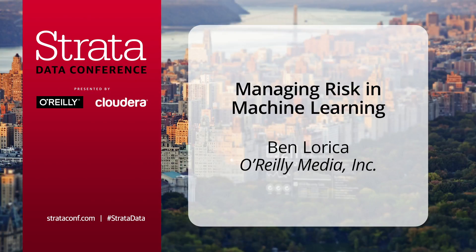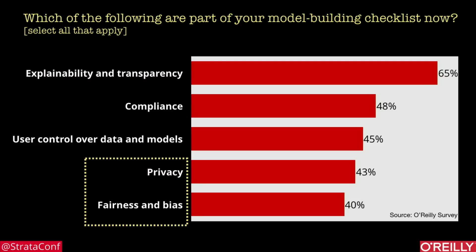Traditionally when we talk of machine learning, we talk about optimizing statistical and business metrics, but it turns out that there are a lot of other important factors to consider. For example, if you're in financial services or healthcare, explainability and transparency might be very important. In the remaining part of my keynote, let me address a couple of issues that are important: privacy and fairness.